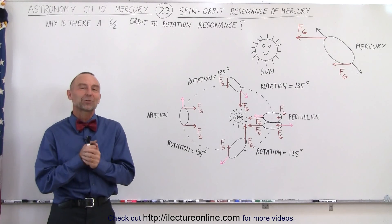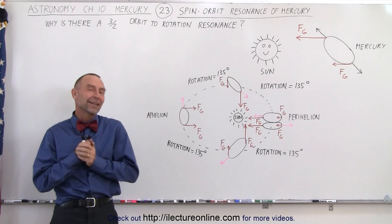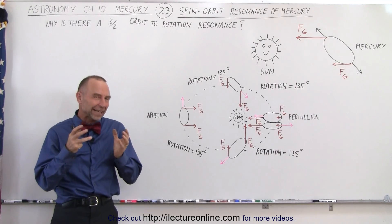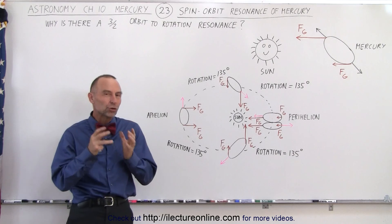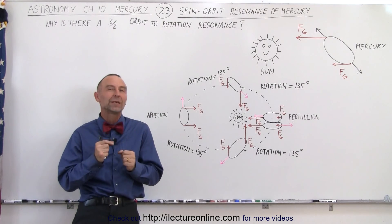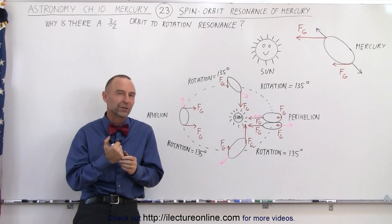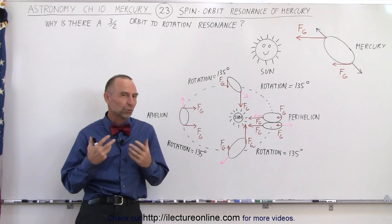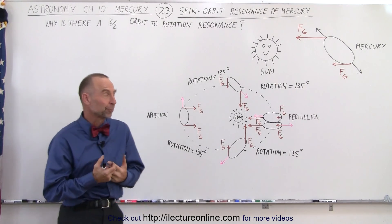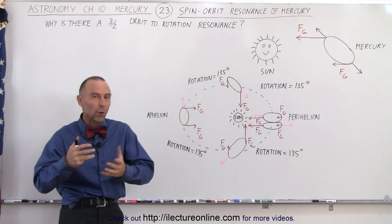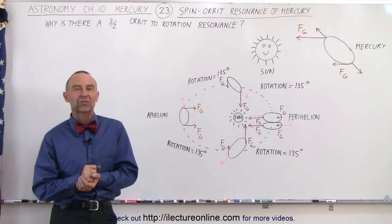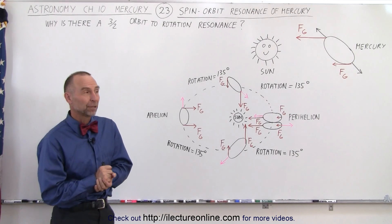Welcome to my lecture online. Now let's take a look at that mysterious 3-to-2 coupling between the orbital period and the rotational period of Mercury. Let's try to figure out why that is actually happening.